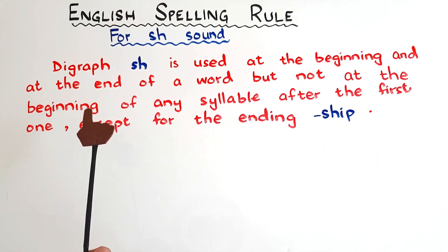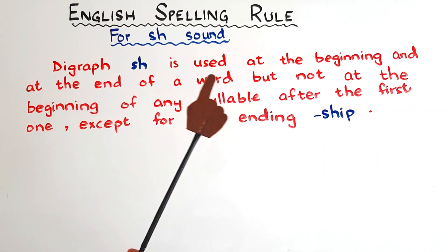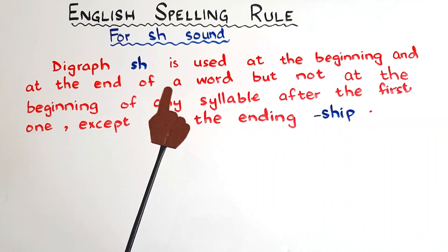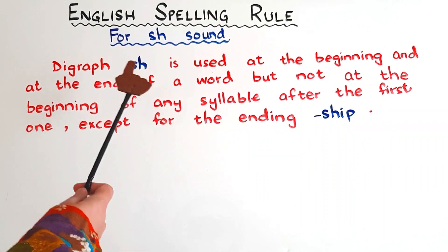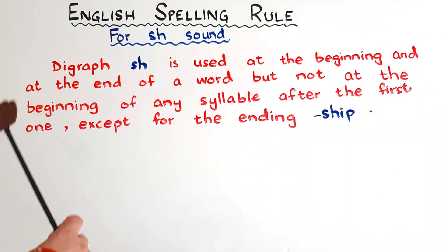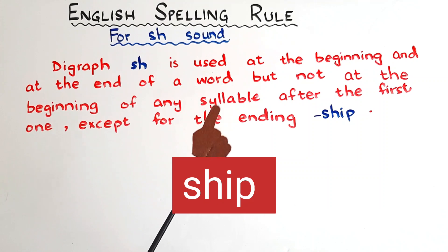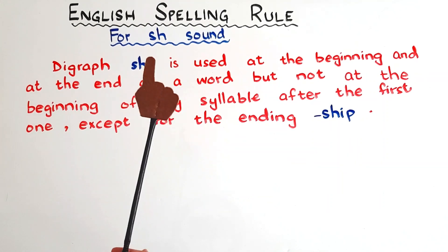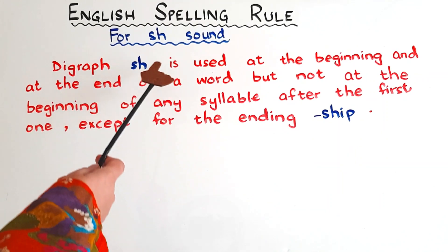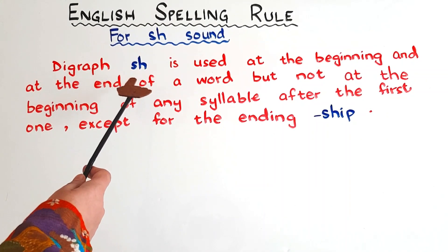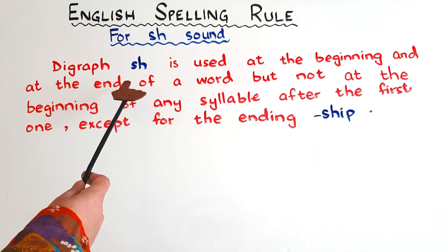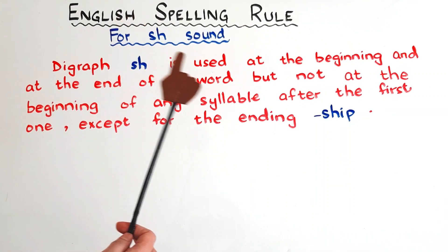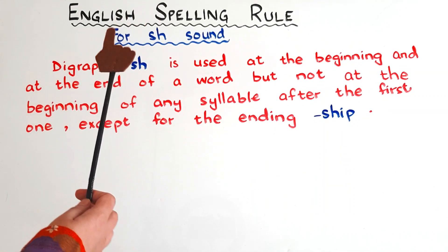When S and H are together, they give a new sound, and that is SH as in 'ship.' But in English, there are certain rules where we can use this digraph for this SH sound. We also have some alternative spellings for the SH sound.